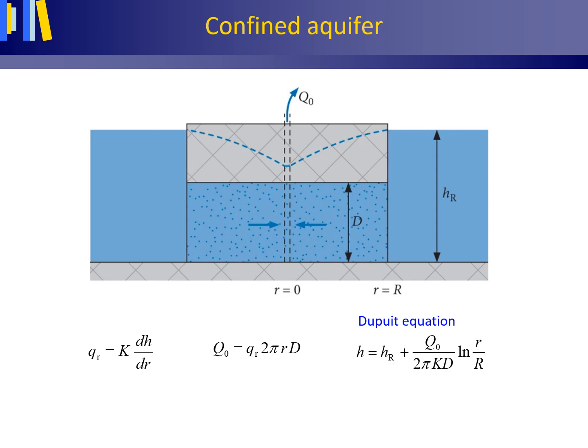Confined aquifers may contain very large volumes of water, as water is stored under pressure in the pore space of the aquifer. The volume flux or discharge Q0 from such a well in a confined aquifer equals small qr times 2πr times d. Q0 is the volume flux or discharge at small r equals 0 from the well in cubic metres per day. Small qr is the radial symmetric volume flux density in metres per day. 2πr is the circumference of a circle in metres, and 2πr times d is the cylindrical area perpendicular to the radial symmetric groundwater flow in square metres.